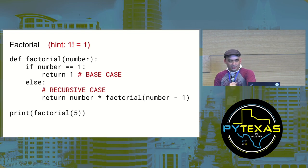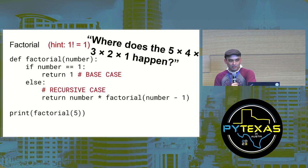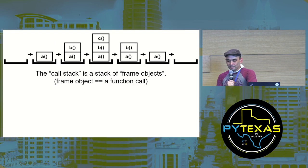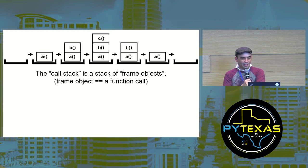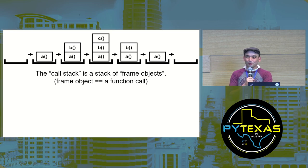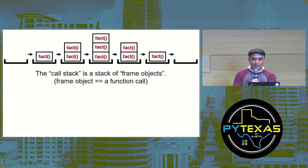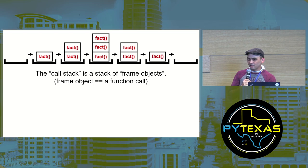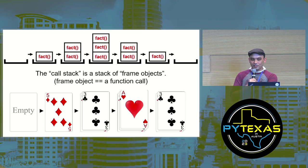You might still wonder: where does the five times four times three times two times one actually happen? It happens across several function calls on the call stack. In recursion, all the function calls are for the same function — the call stack doesn't contain frame objects representing functions, it contains frame objects representing function calls. That's a subtle but important distinction. Let's use a stack of cards to represent the call stack and frame objects.